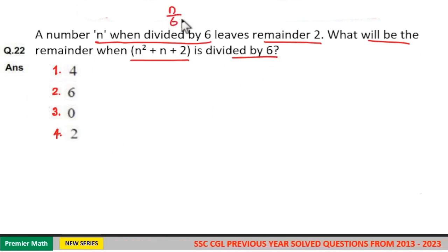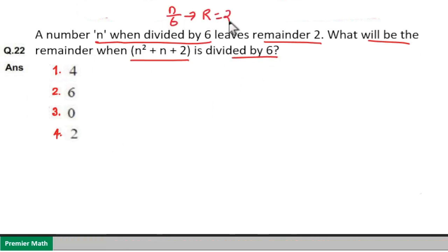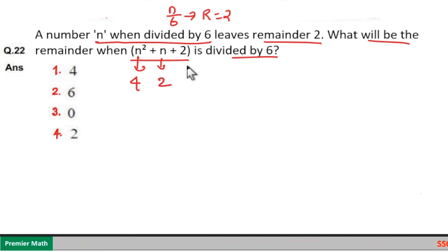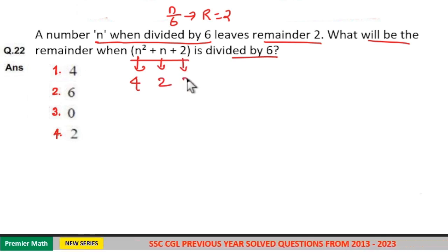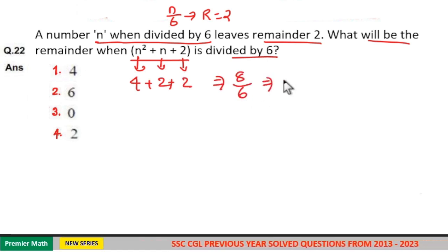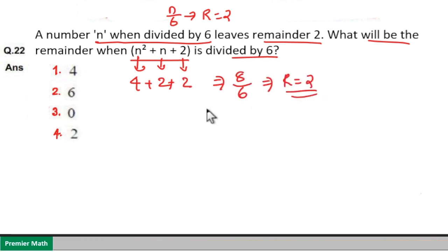Since n divided by 6 gives remainder 2, n squared gives remainder 4 (2×2), n gives remainder 2, and the constant 2 gives remainder 2. So the total is 4 + 2 + 2 = 8. Dividing 8 by 6 gives remainder 2. So Option 4 is your answer.